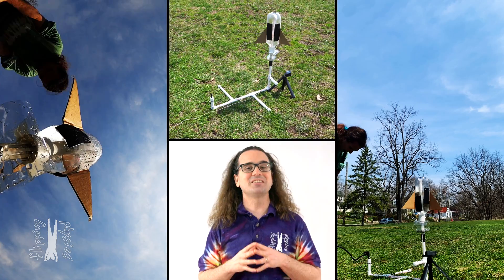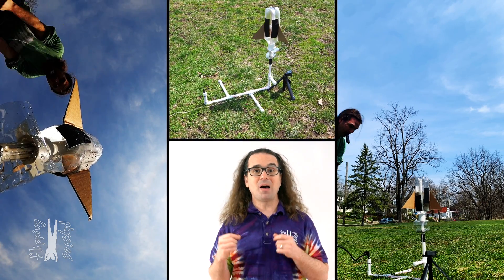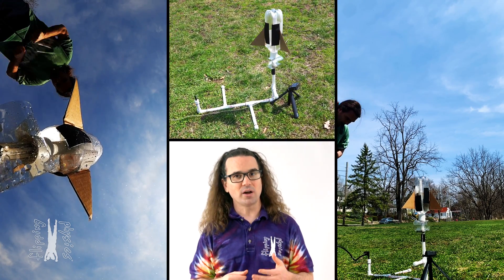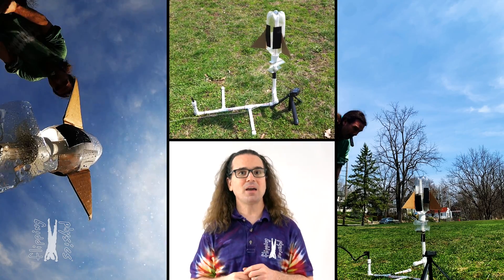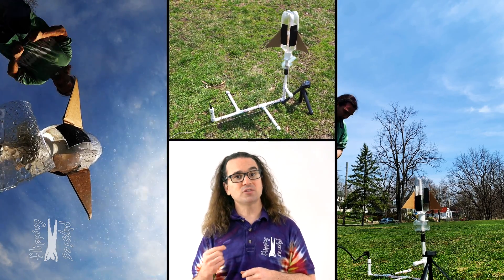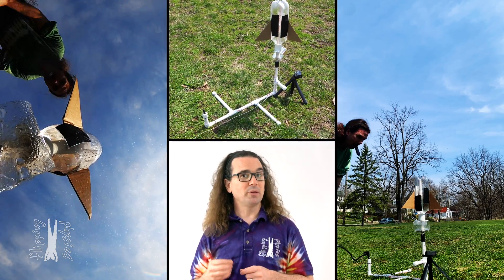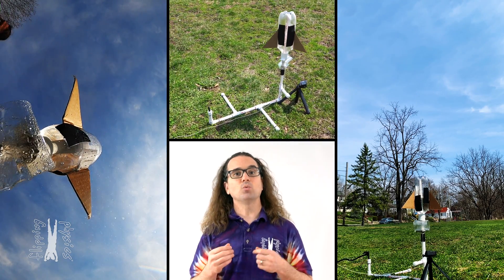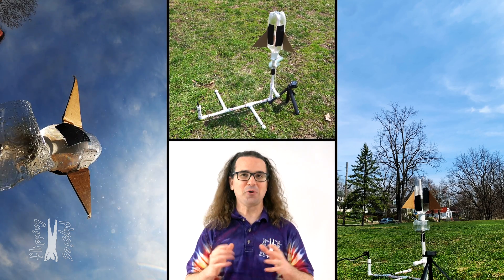This is a water rocket. The bottle is about one third filled with water. The half inch PVC pipes and bottle are filled with compressed air. When I pull on the string, the water rocket will be released, the water will go down, and the rocket will go up. Here we go.